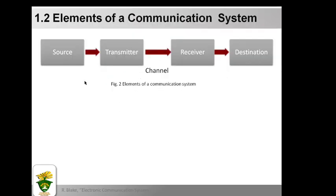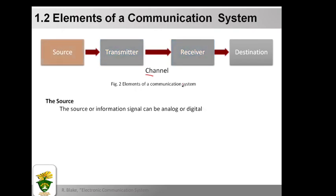Any communication system moves information from a source to a destination through a channel. The information from the source will generally not be in a form that can travel through a channel directly, so a transmitter is employed, and on the other end is the receiver. The information signal can be of analog or digital form, and sources are often described in terms of the frequency range they occupy.